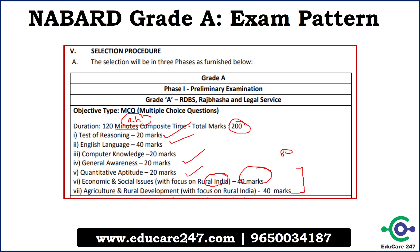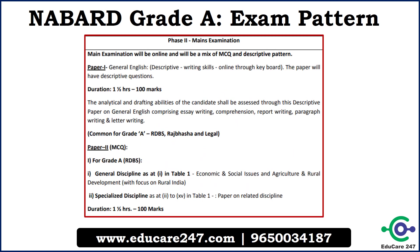The general awareness section is also important because it has 20 marks, so accordingly you can start your preparation. The Phase 2 examination will have two papers. The first paper will have general English and will carry 100 marks, and one will be given 90 minutes to complete this paper. The second paper will be economic and social issues and agriculture and rural development with focus on rural India — this will also carry 100 marks and one will be given 90 minutes. This pattern is the same as the previous year pattern.